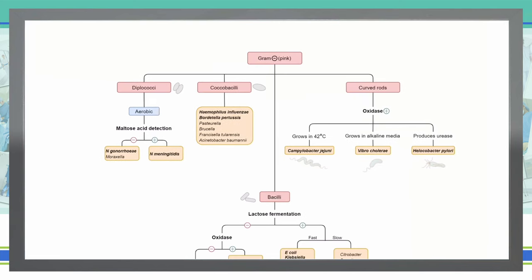So we've got a gram-negative organism, and we can then look at their specific structure under a microscope and determine if we're dealing with diplococci, coxobacilli, or curved rods. If we see diplococci and it's aerobic, we can check for maltose acid detection.